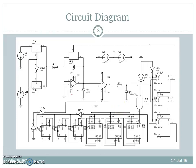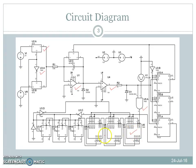Considering the circuit diagram of the dual slope ADC: the single pole double throw switch is implemented using 4016 and 7404. The integrator and comparator are both implemented using the 741 operational amplifier. The gating logic consists of 7408, and the counting section is implemented using 7490 decade counters.